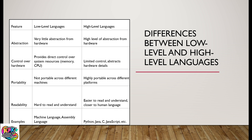Differences between high-level languages and low-level languages: First, abstraction — low-level languages have very little abstraction from hardware, while high-level languages have a high level of abstraction. Second, control over hardware — low-level languages provide direct control over system resources, but high-level languages offer limited control. Third, portability — low-level languages are not portable across different machines, but high-level languages are portable across different machines and platforms.